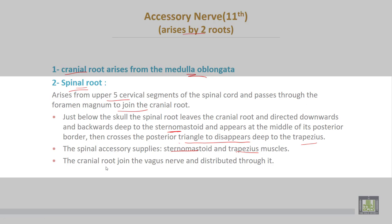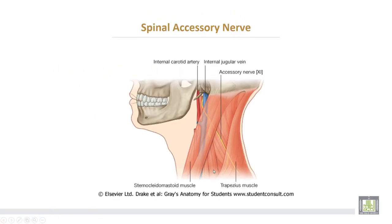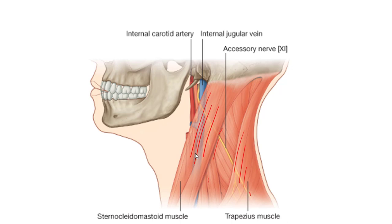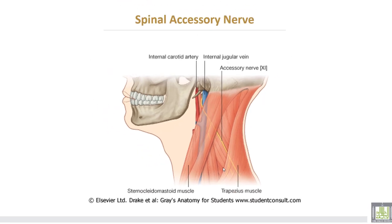The cranial root joins the vagus nerve and distributes through it. The spinal root of the accessory exits through the jugular foramen, passes deep to the sternomastoid muscle, travels through the posterior triangle of the neck, then ends deep to the trapezius muscle, supplying both the sternomastoid and trapezius muscles.